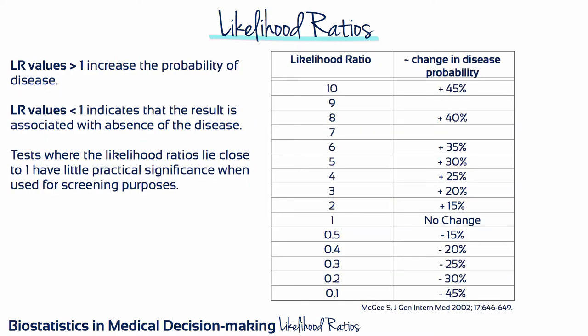Different tests have different likelihood ratios, and the clinical implications of these vary as shown by the rules of thumb in this table. A test with a high positive likelihood ratio is useful to rule in a disease, while a test with a low negative likelihood ratio is useful to rule one out.